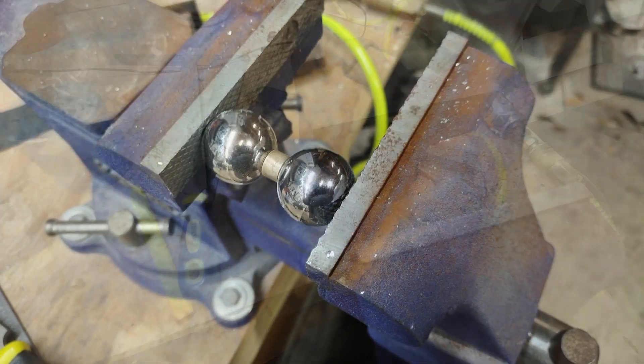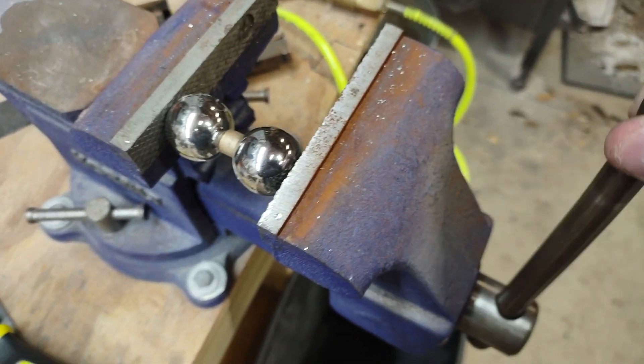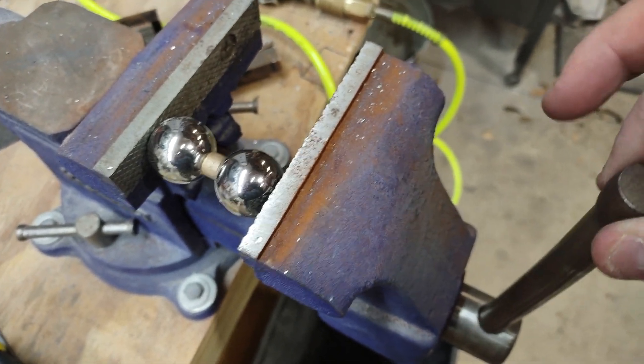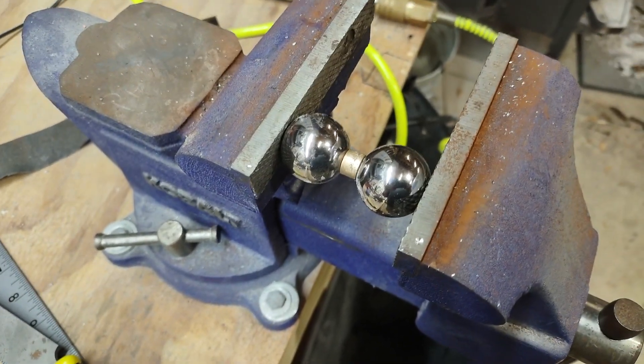Here we are. We've got it in the vise and I've got it taut. It's not overly tight but it's also not super loose. From here, this is where we're going to actually squeeze it enough to deform the brass.